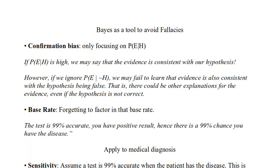The other fallacy Bayesian probability addresses head-on is forgetting to factor in the base rate. If a test is 99% accurate and you have a positive test, it is very easy to fall into the trap of thinking there's a 99% chance you have the disease. So two things Bayesian statistics allows us to avoid: confirmation bias, and the mistaken belief that a 99% accurate test means a 99% chance of having the disease.